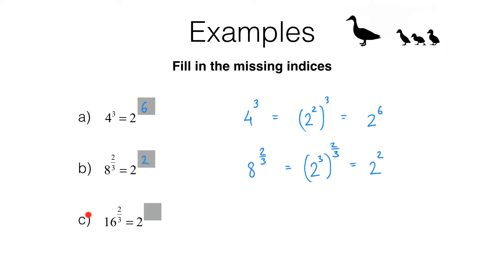Pause the video and have a go at question c for yourself. Here's the answer: 16 to the power of 2 thirds is going to be 2 to the power of 4, all raised to the power of 2 thirds. That's because 16 is 2 to the power of 4. Now to simplify this we need to multiply these indices. 4 times 2 thirds is 8 thirds, so we have 2 to the power of 8 thirds. The missing index here is 8 thirds.